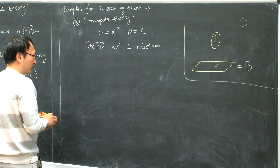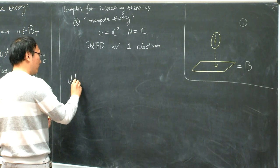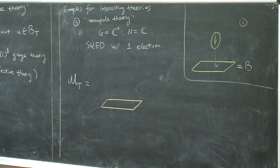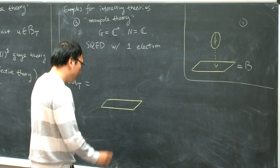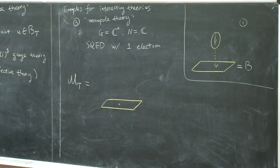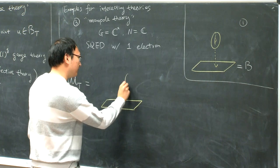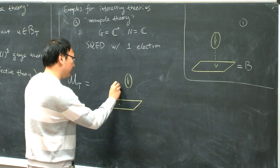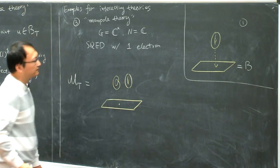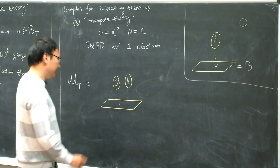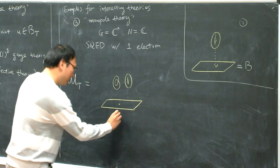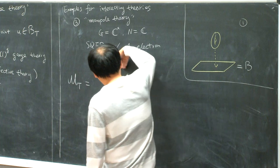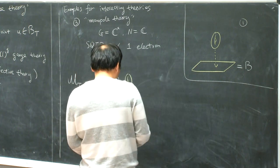For this theory, the Coulomb branch would look like the following. Again, you have a one-dimensional base, so it looks like the complex plane. But the special Kähler metric would have a singularity. If you are away from this singularity, you will have again an elliptic curve. But over this special point, you will have a curve with a double point. This kind of singularity in elliptic fibrations was classified by Kodaira — this is what he would call an I_1 singularity.